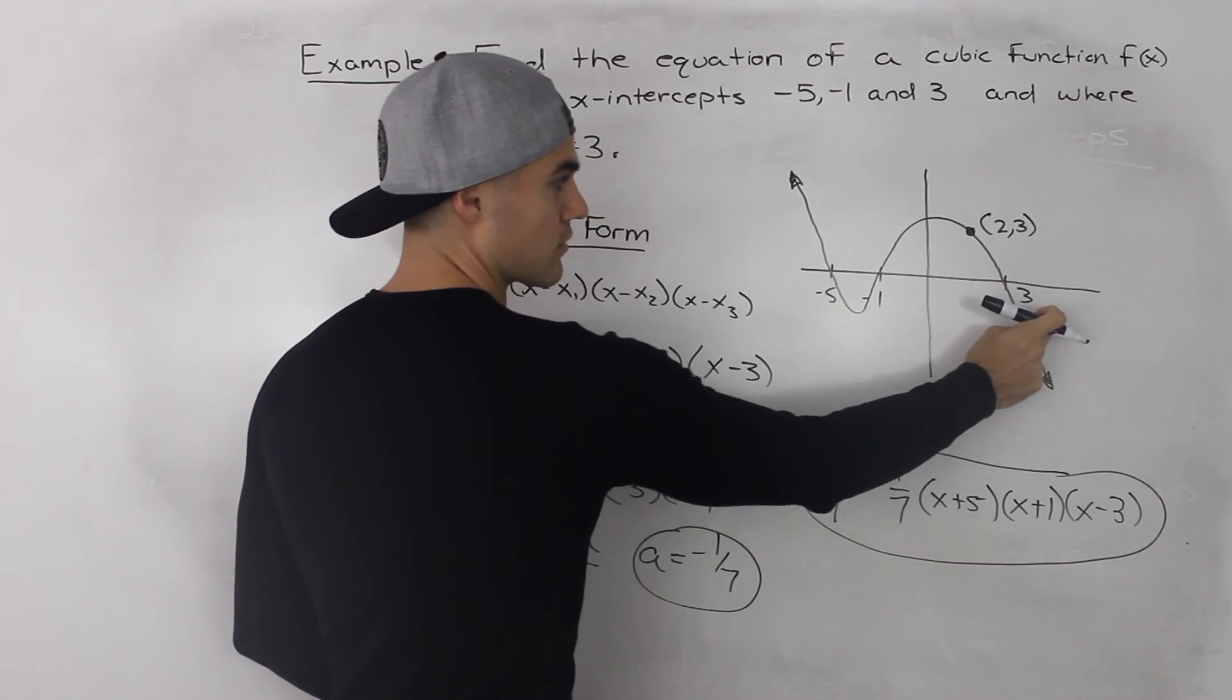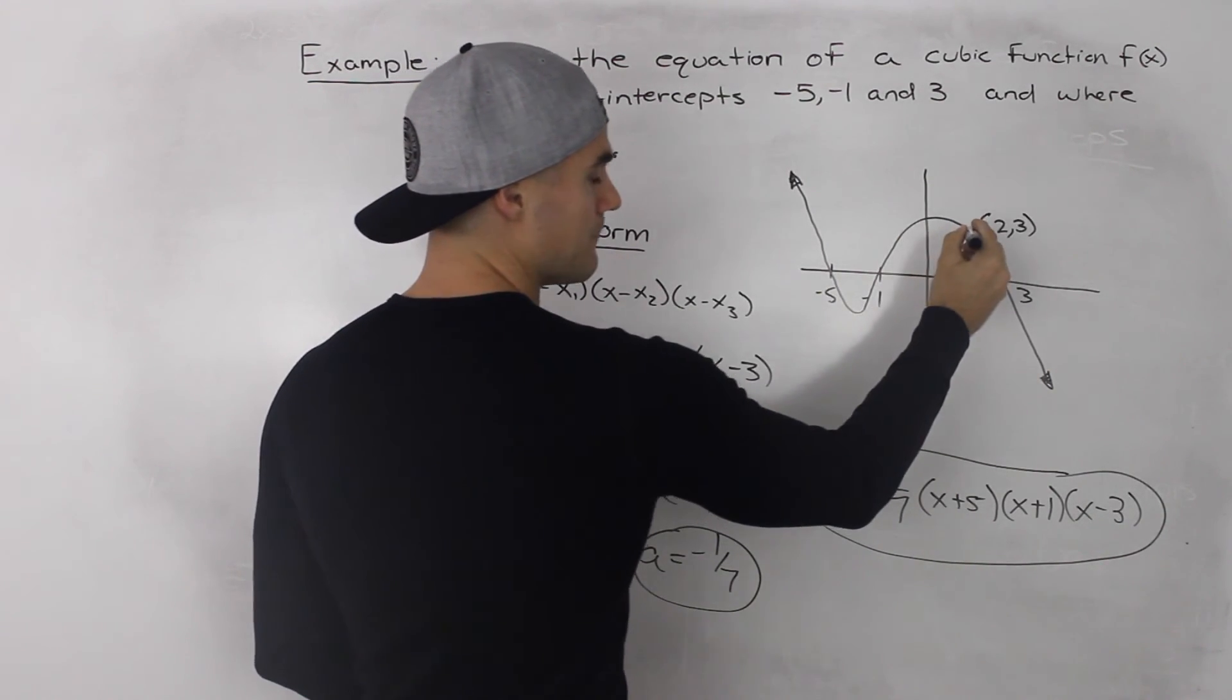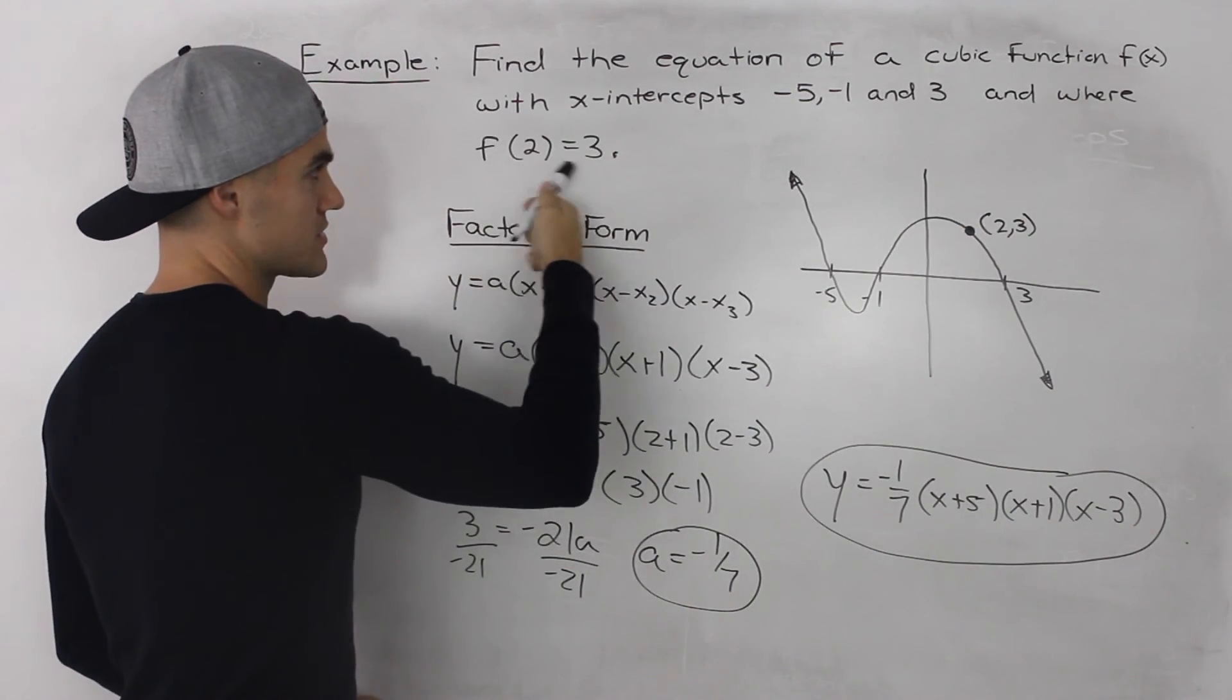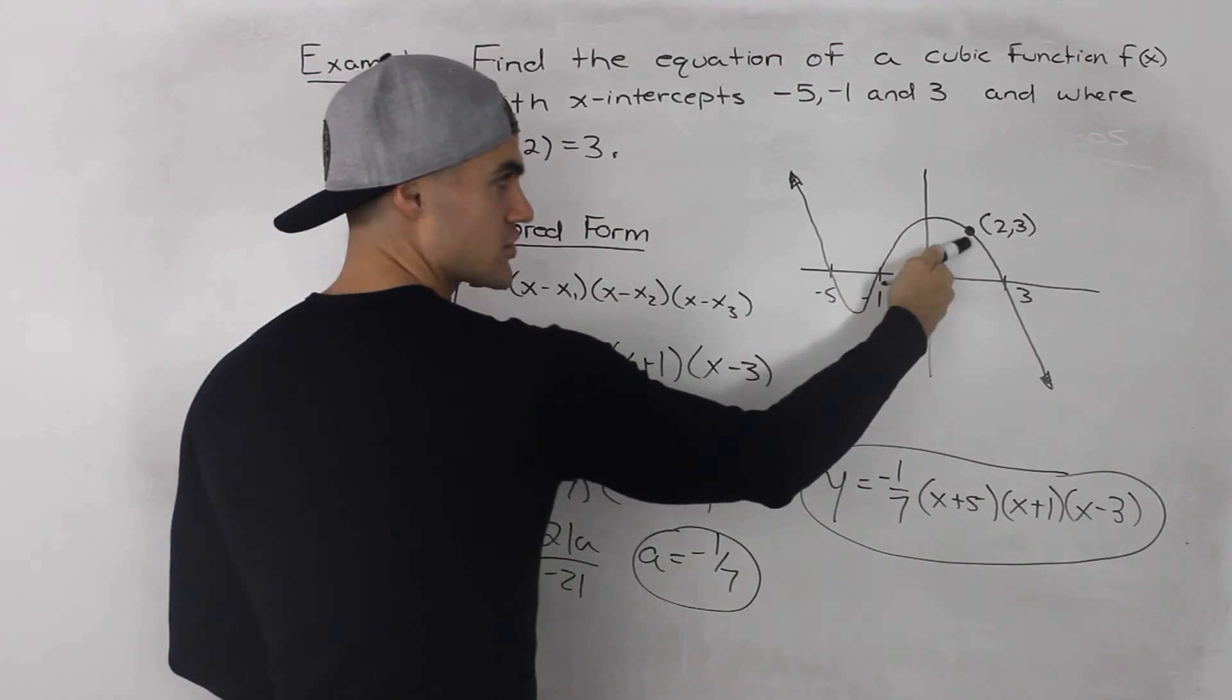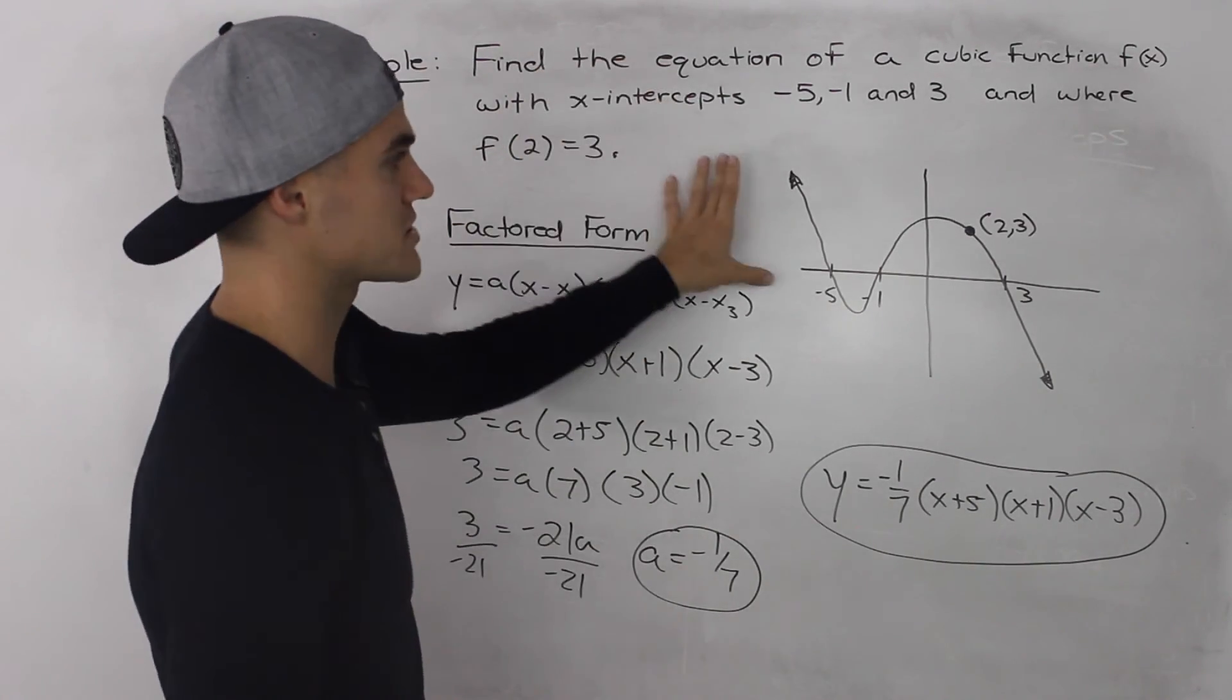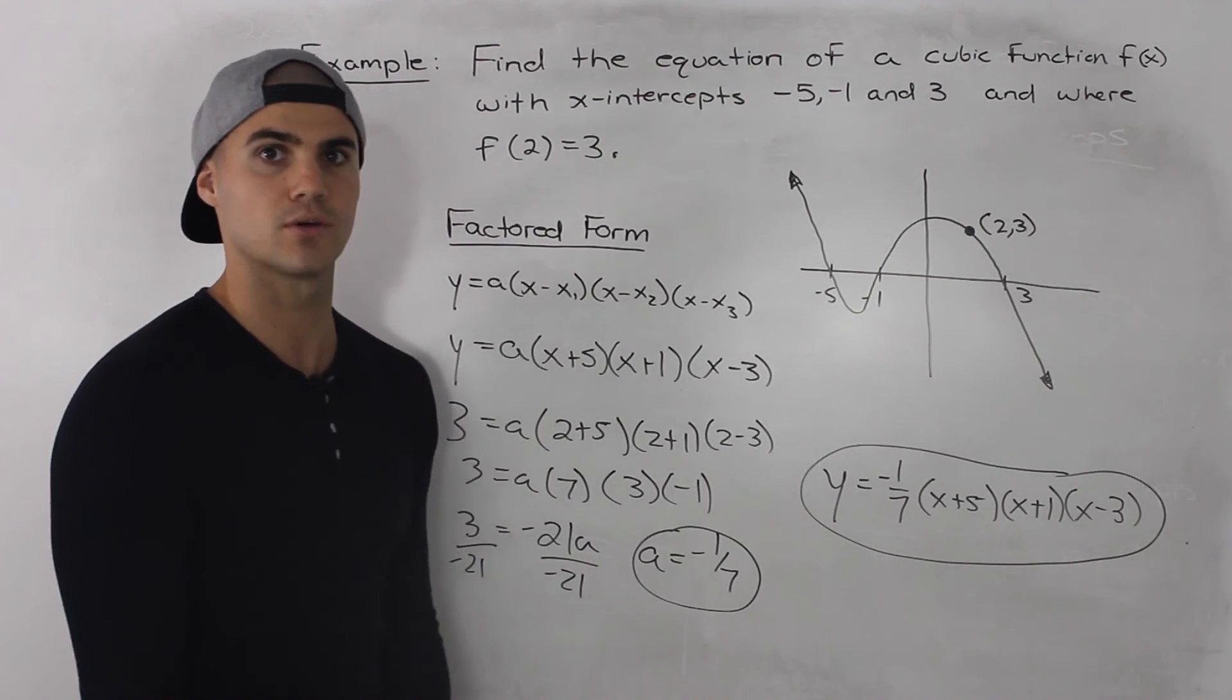And at some point, it's going to go through this point here, (2, 3). So they say that this point is on the function as well, so it would be right there. So that's approximately how this cubic function would look like.